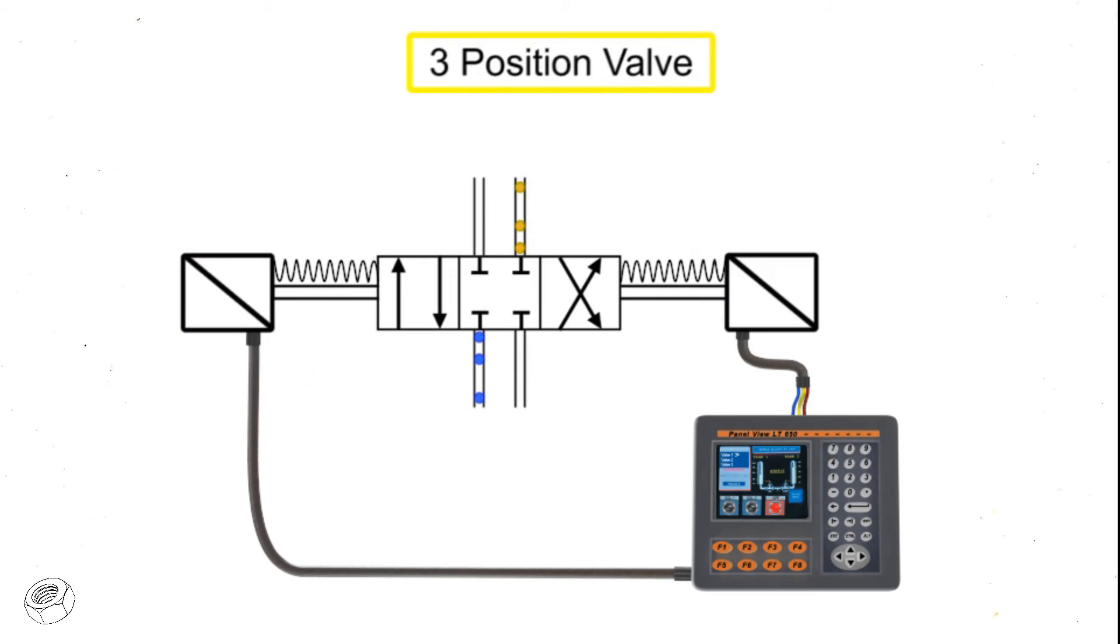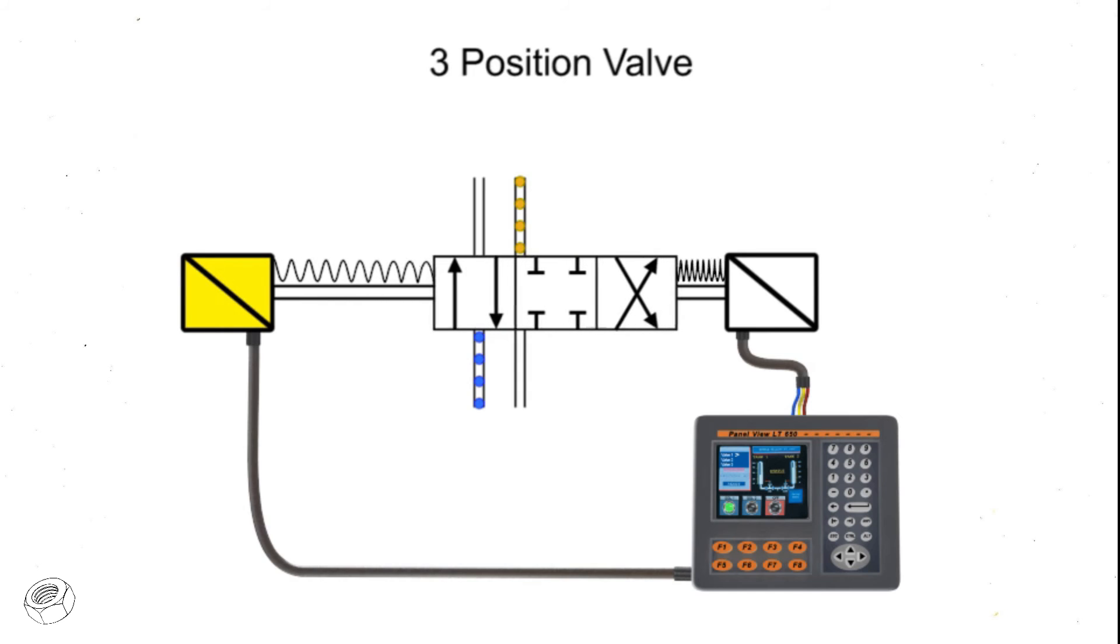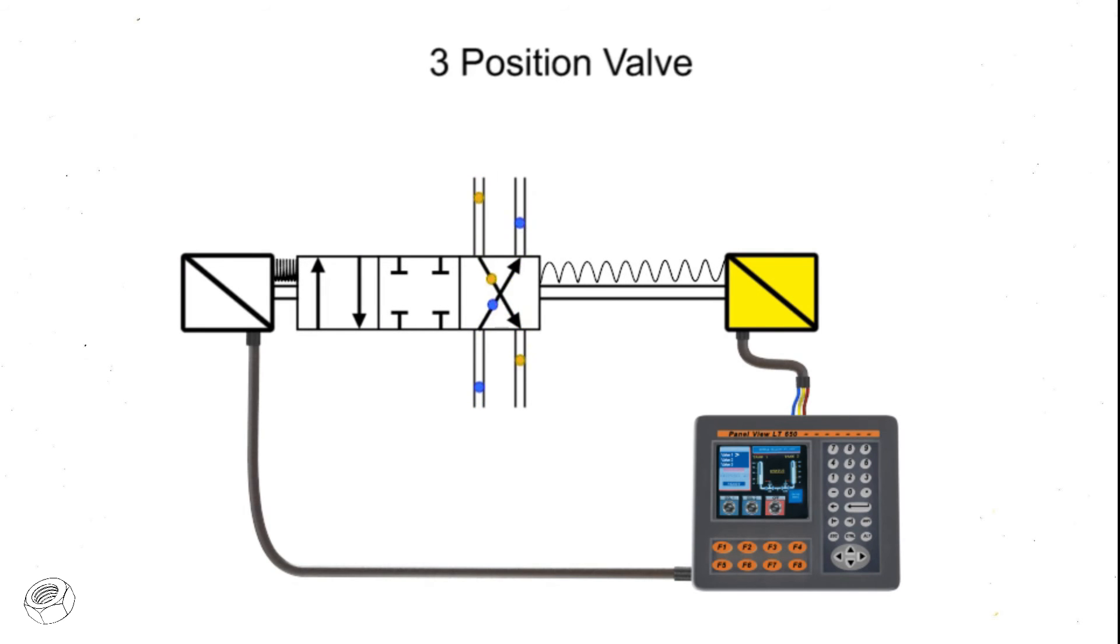A three-position valve has a spring-centered neutral position for its internal spool. Because of the centering springs, it's necessary to hold current on one solenoid or the other to keep the spool in one of its side positions. When each solenoid is energized, the valve shifts to the appropriate position. Any time both solenoids are de-energized, the valve spool will spring to center and stop the fluid flow. Therefore, a three-position valve requires a maintained electrical signal for its operation.